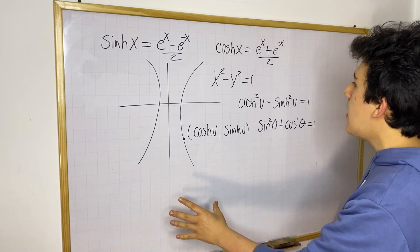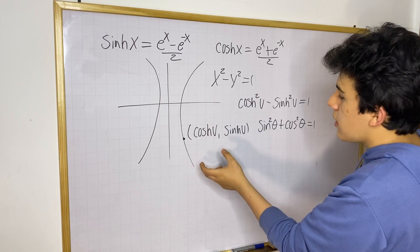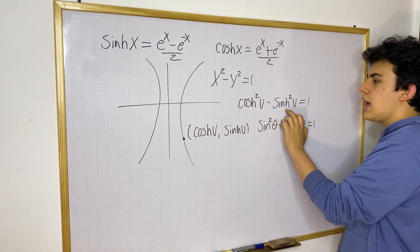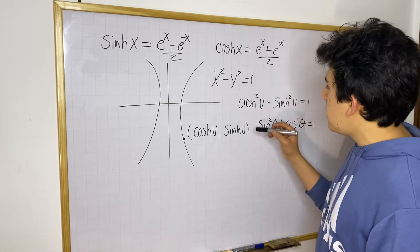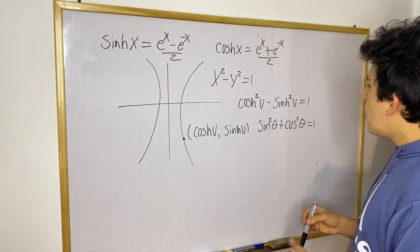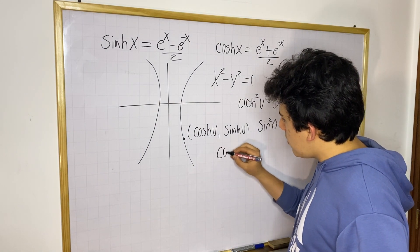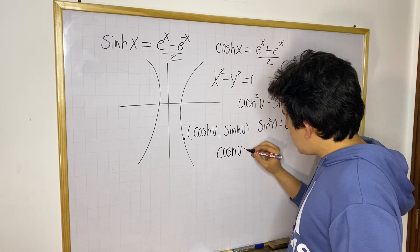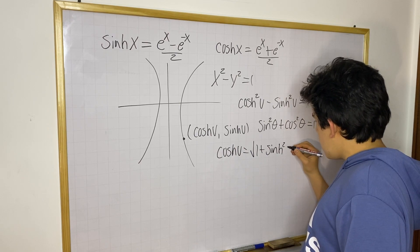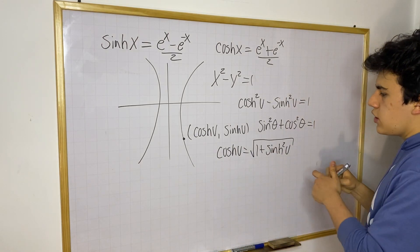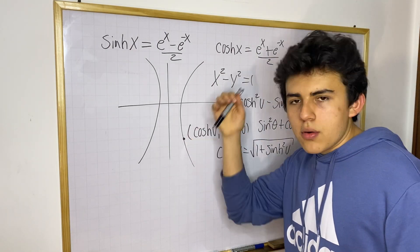Since x and y represent coordinates, you can replace x and y with hyperbolic cosine and hyperbolic sine. This means that whenever you're working with a problem involving cosh and sinh, you can create relationships using the unit hyperbola equation. For example, cosh(u) = √(1 + sinh²(u)) — this is true based on the unit hyperbola equation.